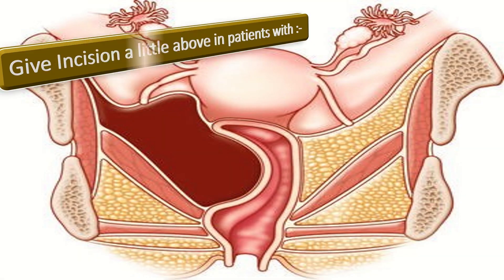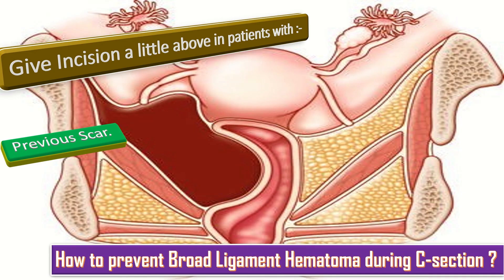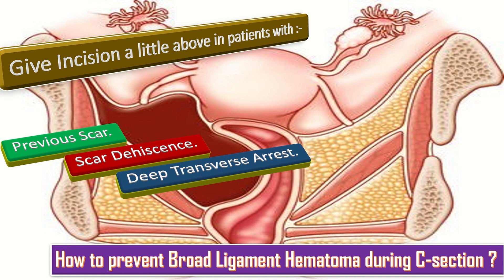To prevent broad ligament hematoma during cesarean section, give the incision a little above, especially in patients with a previous scar, those having scar dehiscence, and those with deep transverse arrest.